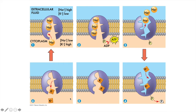As the potassium leaves the transporter we are back where we started and the molecule is ready to shift more sodium outside the cell. Now on the face of it this is a very confusing process. Why is the cell increasing the concentration of two concentrated ions and not equally — three sodiums traded for two potassiums?